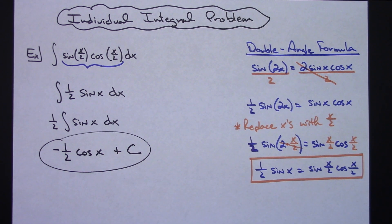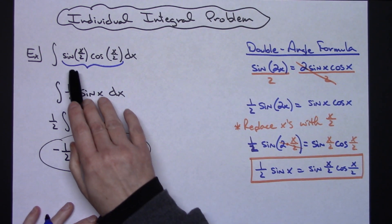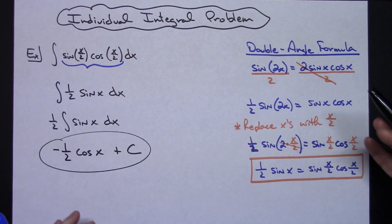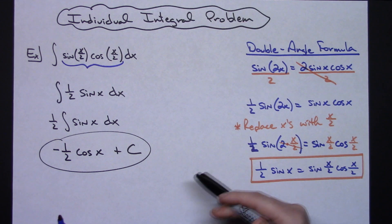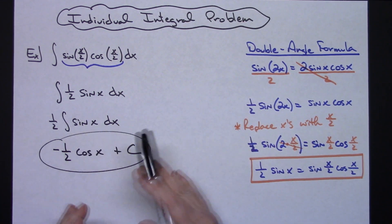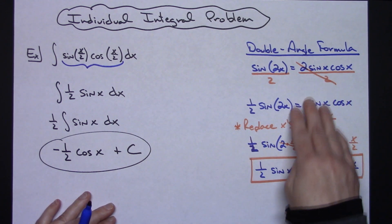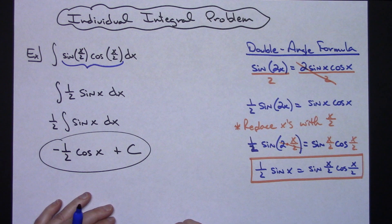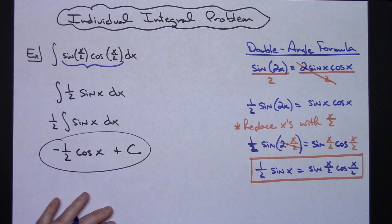So the bottom line here is being able to recognize this integral, having your different formulas memorized such as your double angle formulas so that you can recognize that, and then with a little manipulation you can end up doing a nice substitution that makes the integral really simple from that point forward.